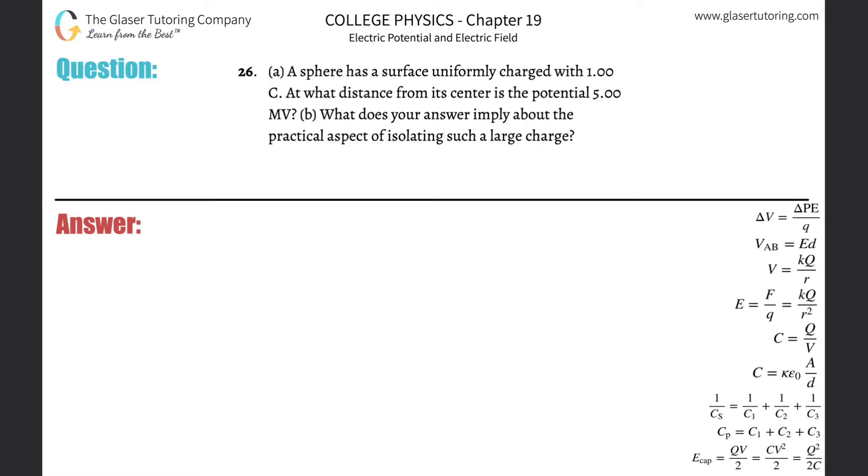Number 26, letter A: A sphere has a surface uniformly charged with 1 coulomb. At what distance from its center is the potential 5 megavolts? All right, so we have to make a couple of assumptions.